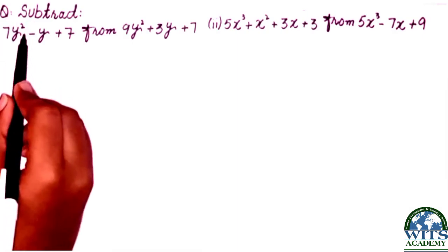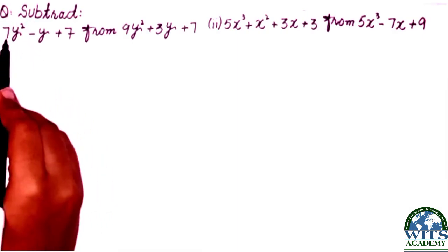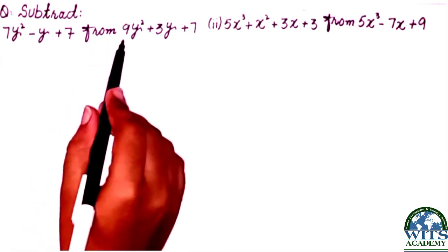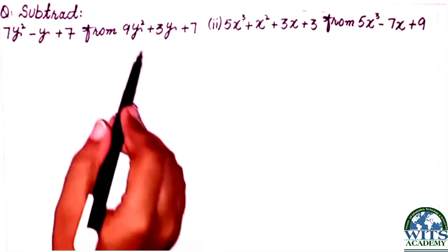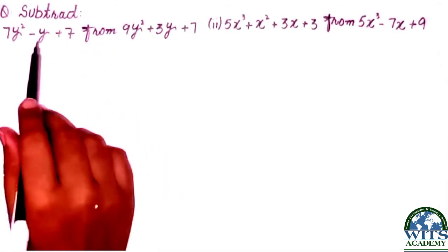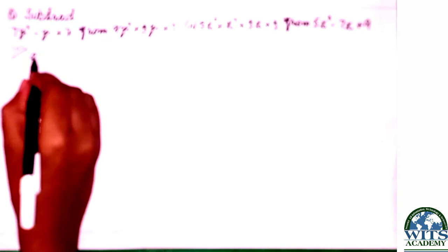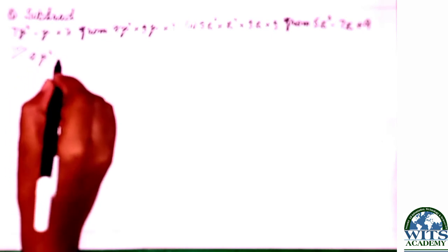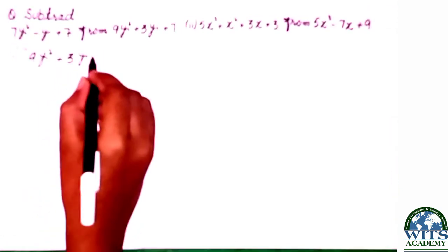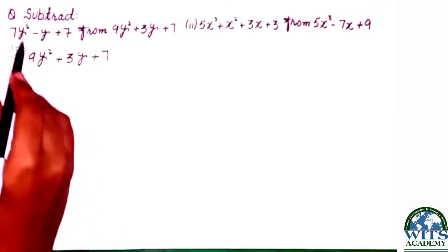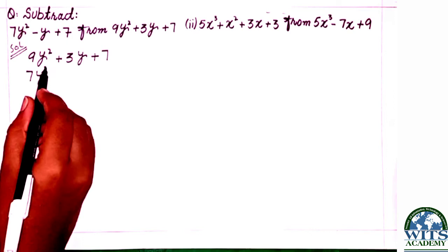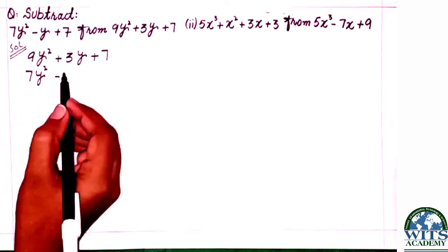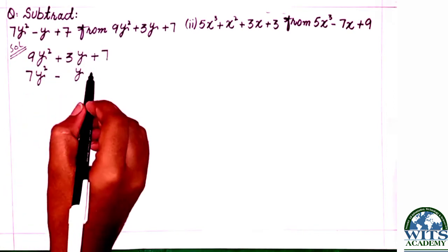Next question: subtract 7y squared minus y plus 7 from 9y squared plus 3y plus 7. Students, we have to subtract from - that means we write the second value first. We write 9y squared plus 3y plus 7, then below we write 7y squared minus y plus 7.